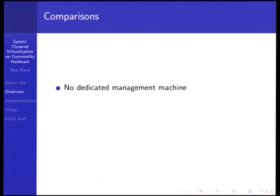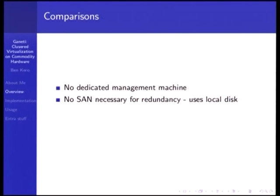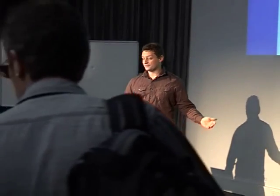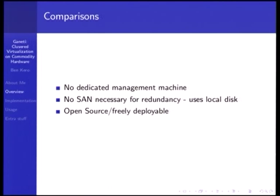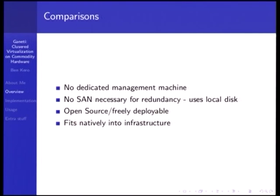Comparisons to existing solutions like ESX: you don't need a dedicated management machine, no vCenter console, no vCenter server, no Windows anywhere in your infrastructure. There's no SAN necessary for redundancy — with ESX you need an approved SAN, meaning you have to spend mid to high five figures, which is not acceptable for a small company. It's open source and freely deployable, so you can deploy it with Puppet, provision systems whenever you need, and the total cost is just hardware plus your time. It fits natively into your infrastructure — RHEL, Debian, or Ubuntu.